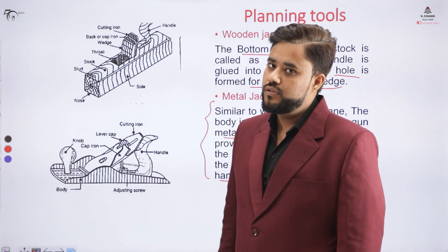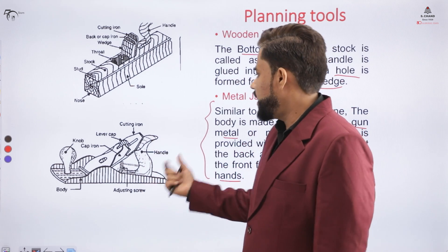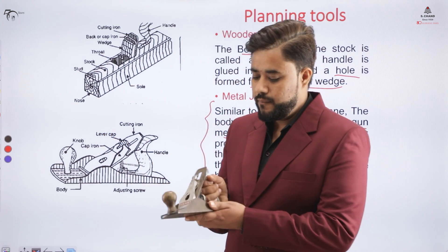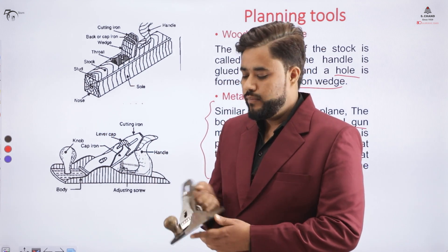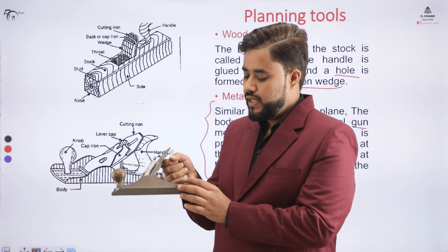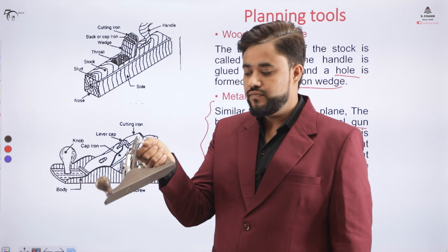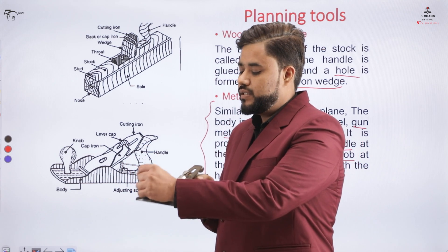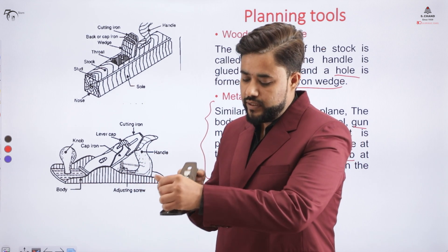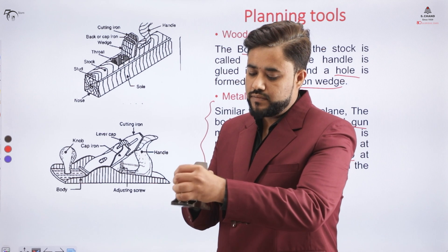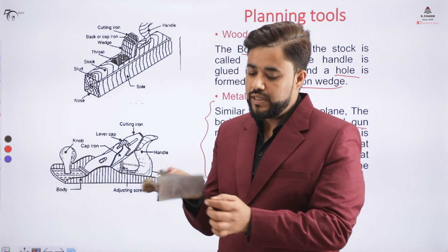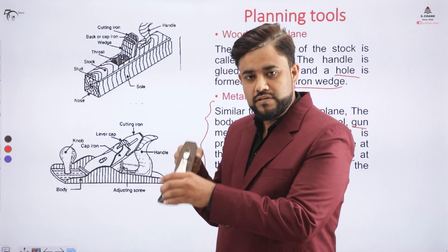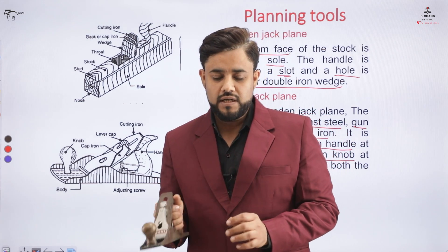This instrument is called a metal jack plane. It is held between both hands — one hand holds the handle and the other holds the knob. The carpenter creates a forward motion on the surface of the wood so that the bottom blade, when coming in contact with the wooden surface, shaves it. This is the metal jack plane.